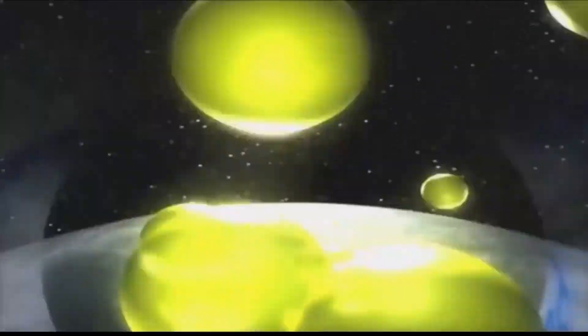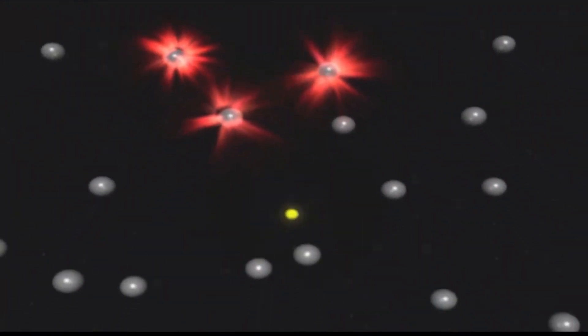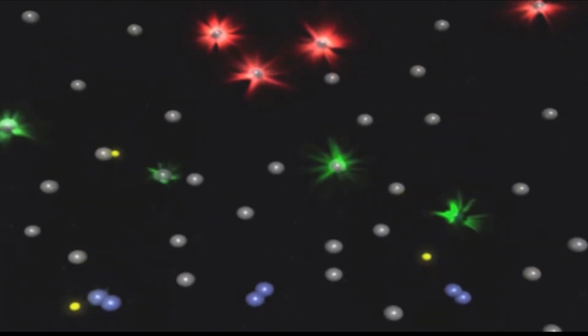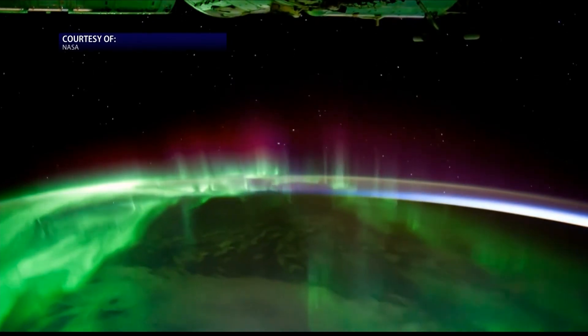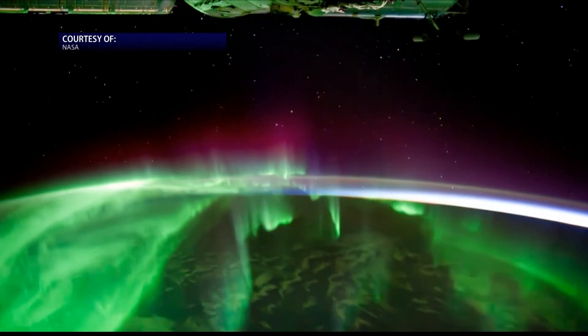As these electrically charged particles strike the atmosphere, they excite oxygen and nitrogen atoms, causing them to light up into the brilliant colors of the aurora. As videos from the last year alone have shown us, the auroras can also be seen from space.